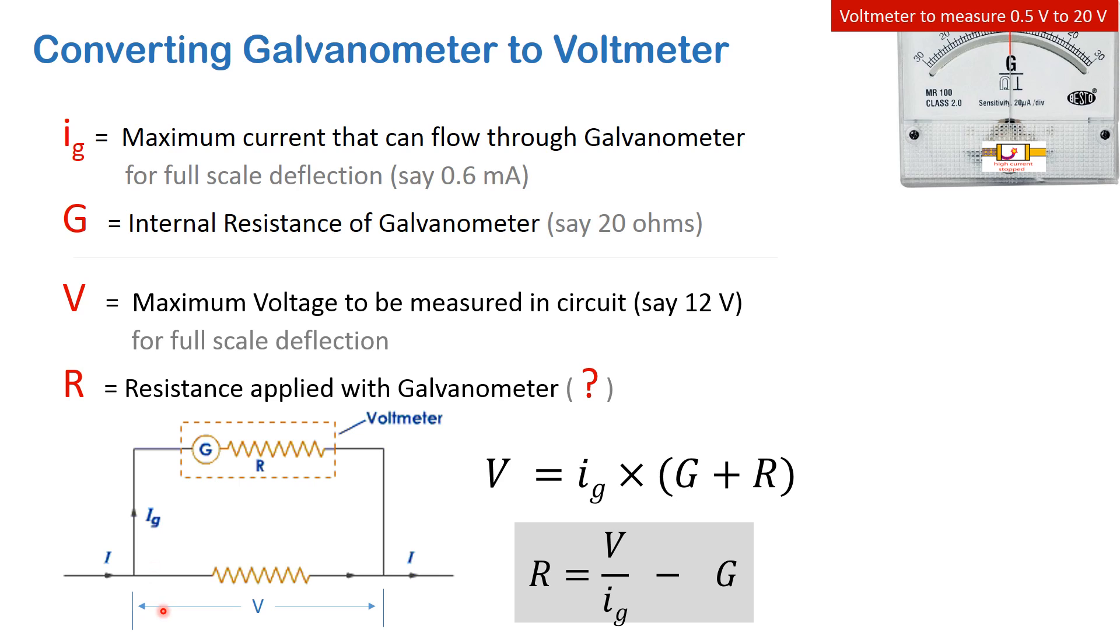So this V is equal to ig, which is the current through the galvanometer, multiplied by the resistance in this part of the circuit, which is the internal resistance of the galvanometer G and the resistance R.